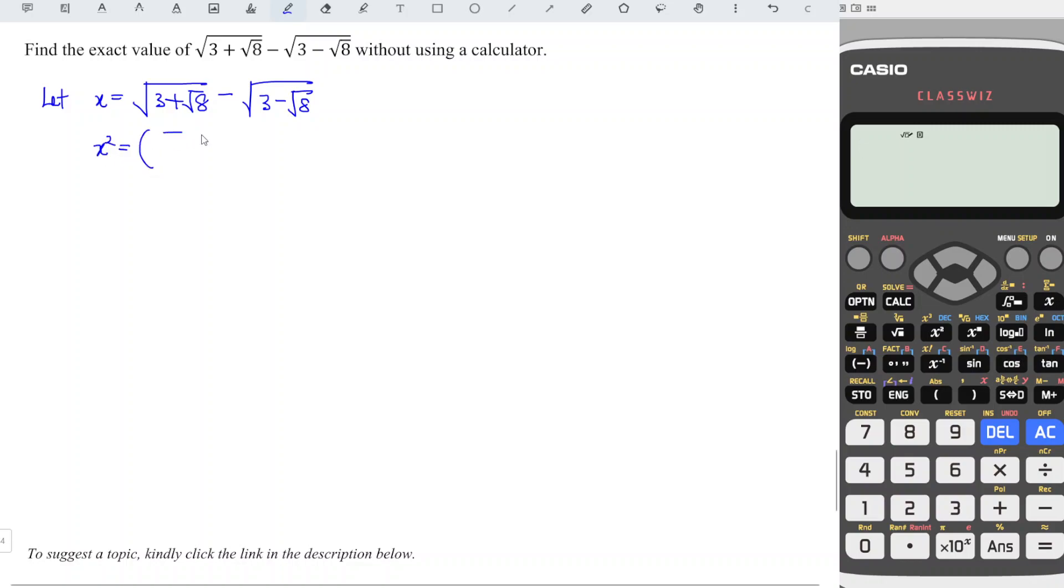So we obtain [√(3+√8) - √(3-√8)]², the whole thing squared. This is similar to (a-b)², which equals a² - 2ab + b².